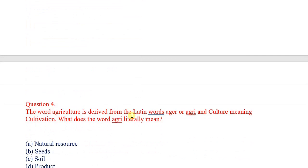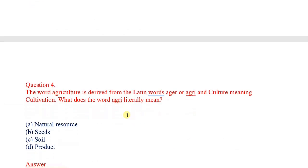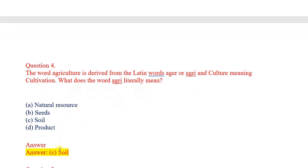Question number 4: The word agriculture is derived from the Latin words ager or agri and culture meaning cultivation. What does the word agri literally mean? Options: natural resource, seeds, soil, product. Correct answer: soil.